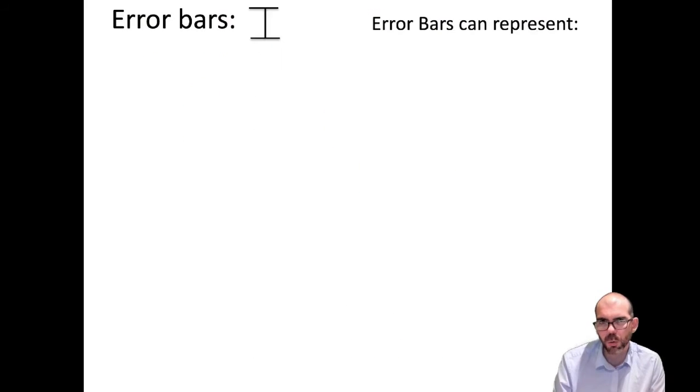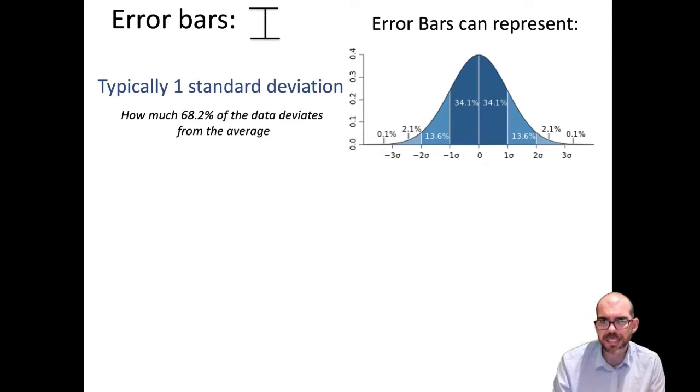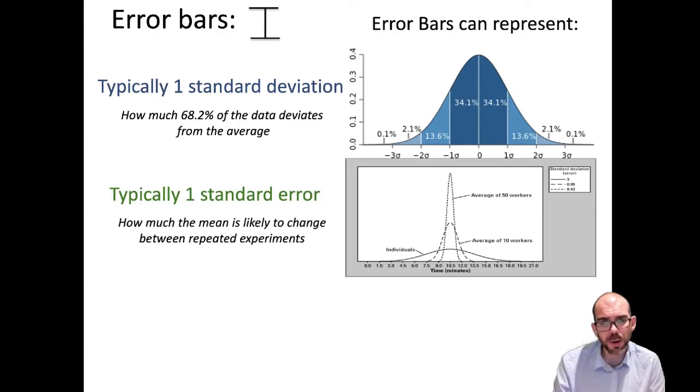What could they mean? Well, these are error bars. And they can represent one of three different things. Oftentimes, it'll represent standard deviation. Standard deviation is just a measure of how much of your data deviates or goes above or below the mean. An error bar can also represent standard error. This is a measure of how likely that data could change if we do repeated experiments.